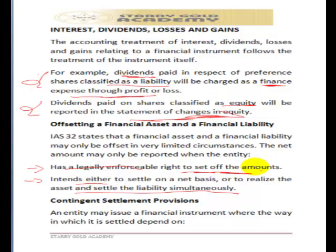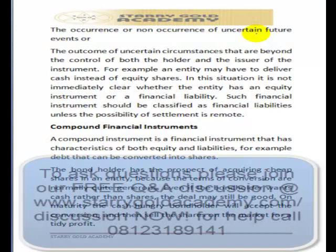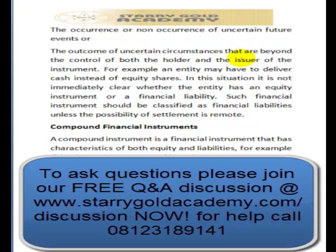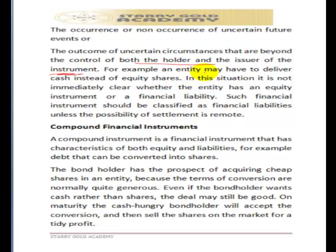Now let's look at contingent settlement provisions. An entity may issue a financial instrument where the settlement depends on a contingency — meaning the occurrence or non-occurrence of a specific future event, or the outcome of certain circumstances beyond the control of both the holder and issuer. For example, an entity may have to deliver cash instead of equity shares. In such cases, it is not immediately clear whether the instrument is equity or a financial liability. Such instruments should be classified as financial liabilities unless the possibility of settlement in that form is remote.